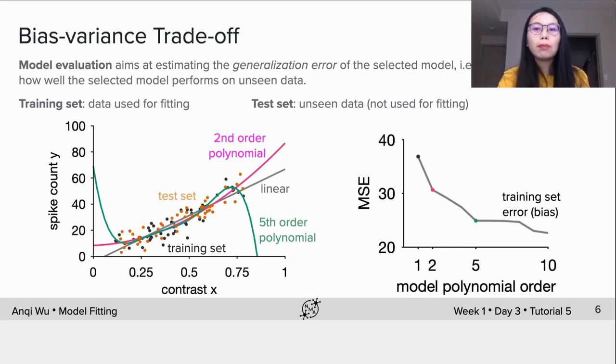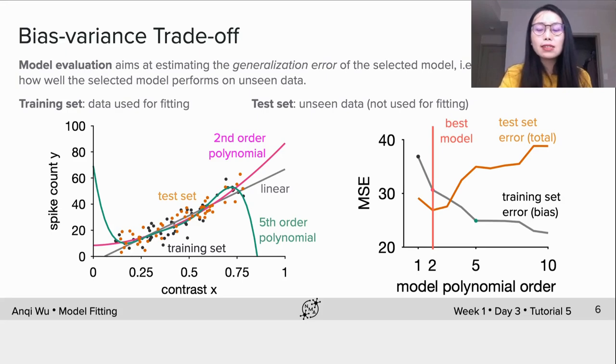Then we apply the fitted model to the test set with unseen data, which are these orange dots here. We can plot the MSE curve on the test set for all polynomial orders and this is considered to be the total error curve because it considers both the fit to the data and the generalization performance across datasets. Thus the best model is selected with the minimum test error, which is two here in this case.